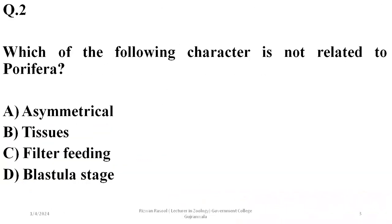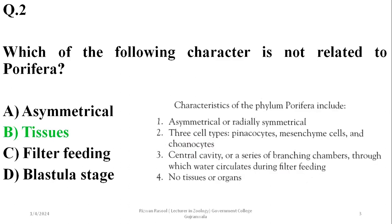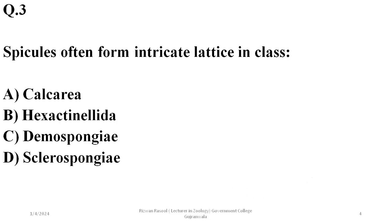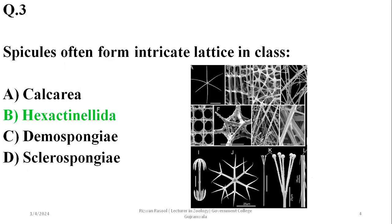Question two: which of the following characters is not related to phylum Porifera? They are asymmetrical, have no tissues, are filter feeders, and have a blastula stage. However, having tissues is not a correct feature — so B is the answer. As noted in the text, there are no tissues or organs in this phylum. Spicules often form intricate lattices in class Hexactinellida; other classes like Calcarea and Demospongiae also have spicules but do not form intricate patterns.